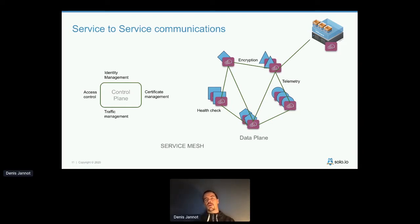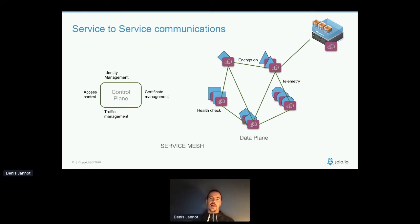In the control plane you specify policies like 'encrypt communication between these services' or 'this service can talk to this one but not that one.' Those rules are then enforced by the data plane. This approach is also extending outside Kubernetes — VMs and bare-metal servers can join the mesh by simply having a proxy deployed on them.